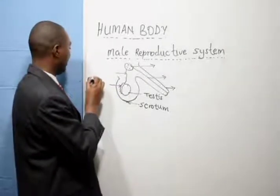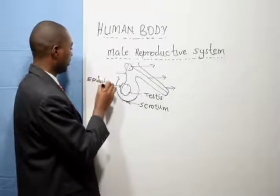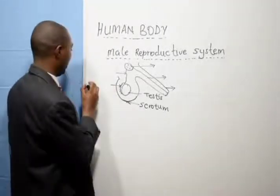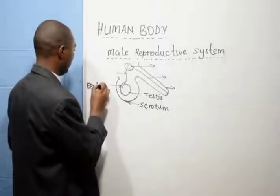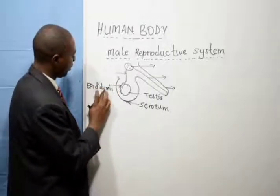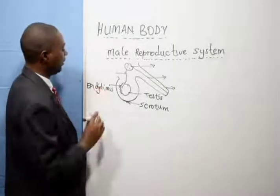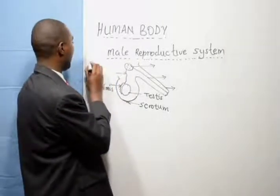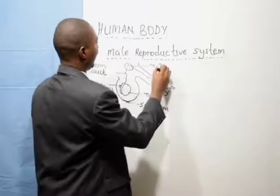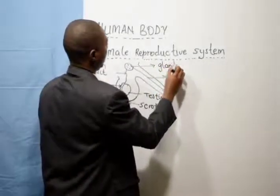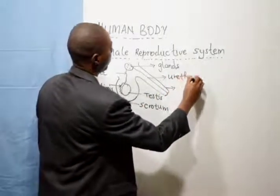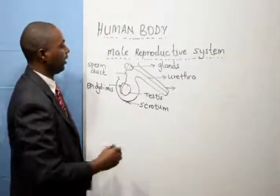Then this is known as the epididymis. This is the epididymis. Then this is known as the sperm duct. And these ones are known as the glands — they can have several names, but we'll just call them the glands. Then we have the urethra, and then we have the penis.